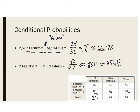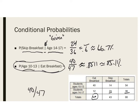One important note: whether you express your answer as a fraction, decimal, or percent is fine — but you must write the probability notation with your answer. Simply writing '40 out of 47' with no context is insufficient. Writing out the probability statement gives it context, and that is more important than choosing between a fraction, decimal, or percent for your final answer.